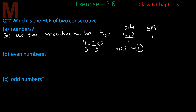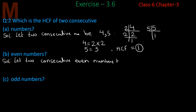So, comparing 4 and 5, and checking other examples of consecutive numbers, the HCF will always be 1. Similarly, if we talk about even numbers — let 2 consecutive even numbers be, suppose, 6 and 8. So 6 and 8 are consecutive even numbers. How do we find their HCF?